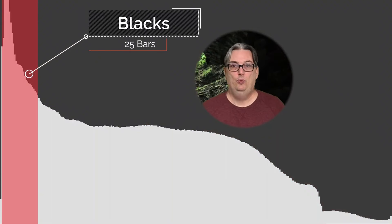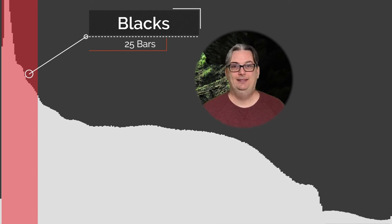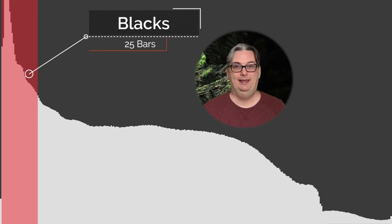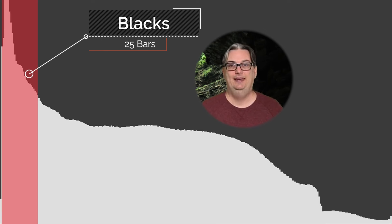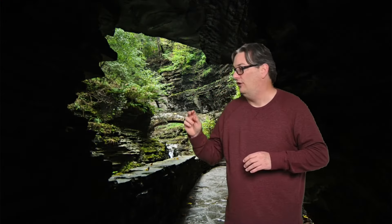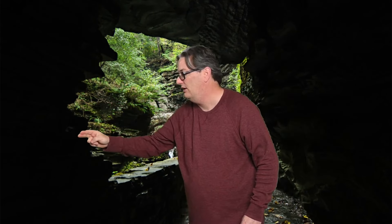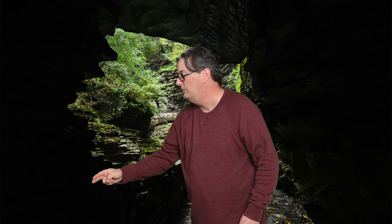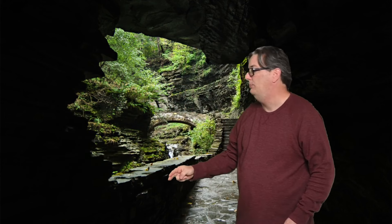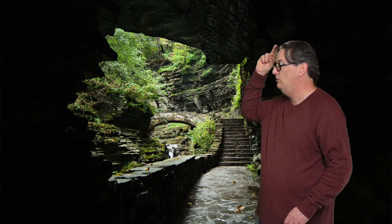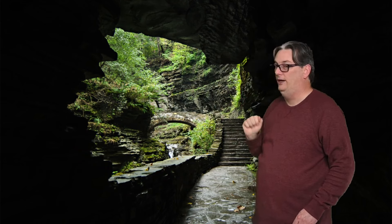Next to the black point, we have 25 more bars known as the blacks. The blacks are a lighter shade of pure black and, unlike the black point, contain detail in that tonal range. For this image, there are lots of blacks from the inside of the cave along the edges — we'd have to zoom in to see them clearly — but we do have blacks along those areas as well as behind me.